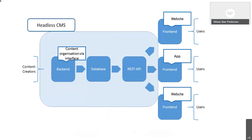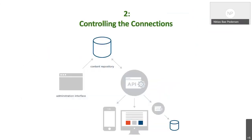Unlike a traditional architecture, in a headless CMS the front end and the back end are completely separate systems. The API provided by a headless CMS enables you to distribute content to any channel, gadget, and platform of your choice. Due to this approach, a headless CMS does not care about how and where your content gets displayed, while at the same time making it easier to deliver content to different channels. In the end, being headless has only one focus: storing and delivering your structured content and controlling the connections.